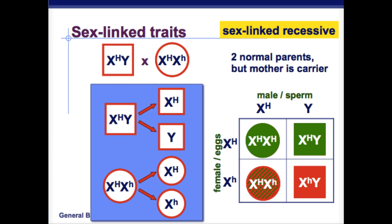In sex-linked traits, when you're looking at the trait you're looking at not only the allele, such as big H, but also the sex chromosome — that's why there's a superscript when looking at sex-linked traits. For a male, they're only getting that allele or trait from their mom because they only have one X.